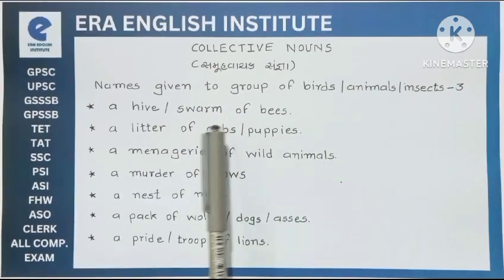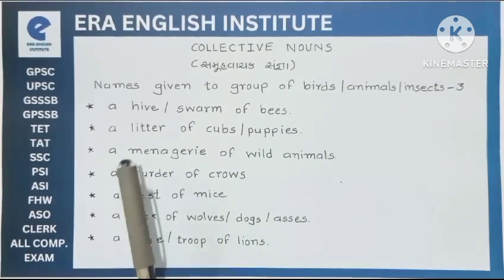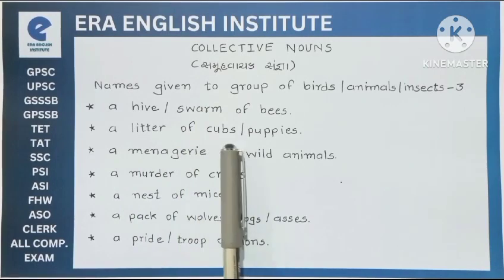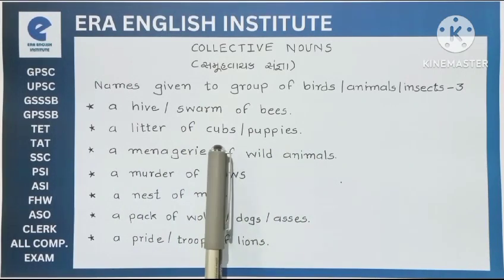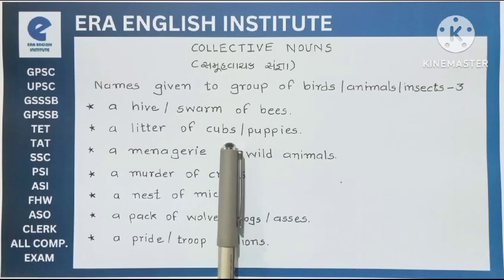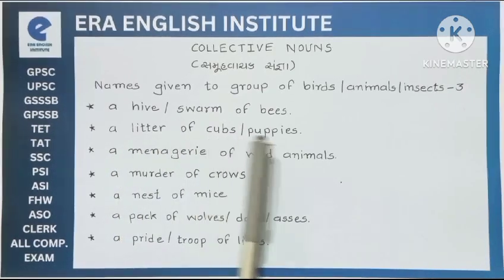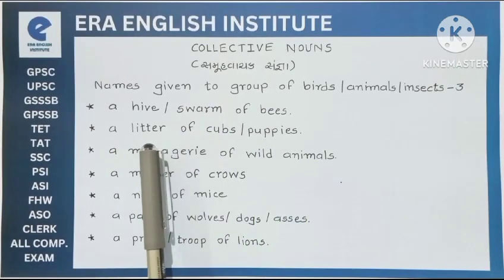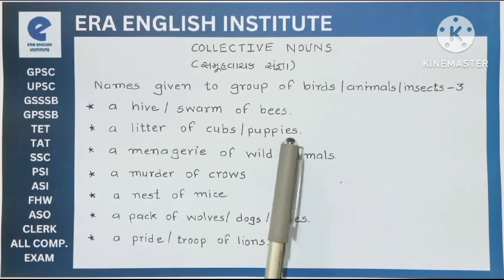मदमाखियों के झुंड के लिए hive और swarm collective nouns उपयोग होते हैं. Next, a litter of cubs or puppies. कुत्तों के बच्चों के लिए और वाघ के बच्चों के लिए भी cub शब्द use होता है. For both of these, the collective noun is litter. A litter of cubs or puppies.